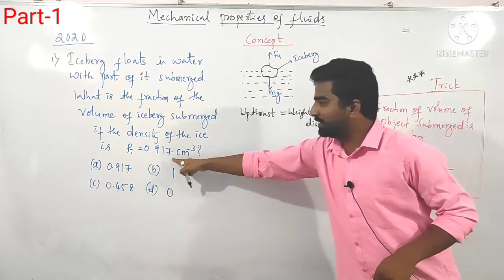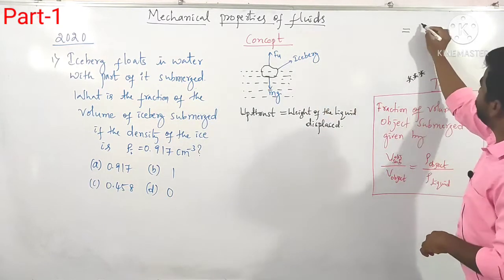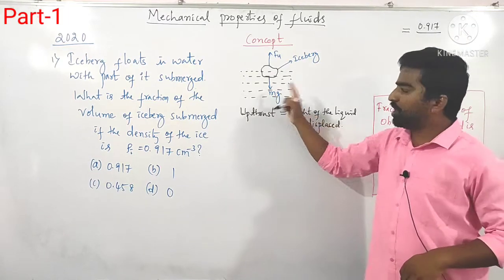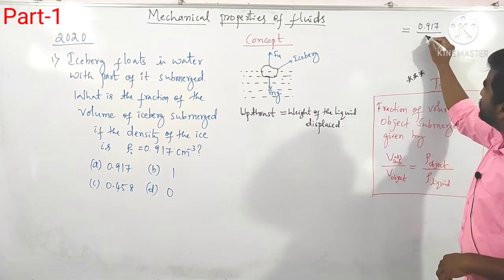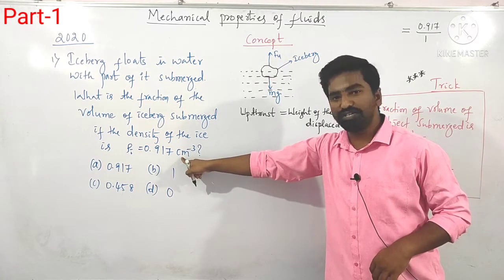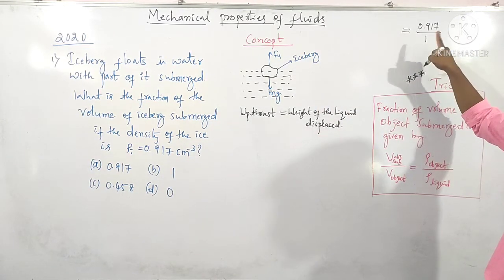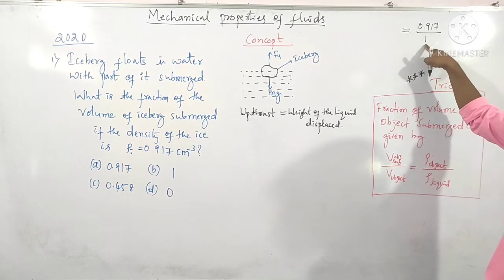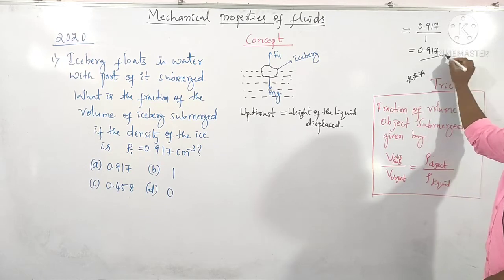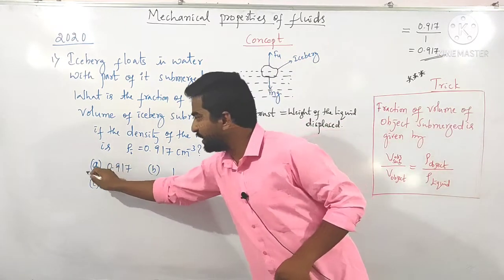The density of the object given here is the iceberg, which is 0.917. The liquid here is water. The density of water in CGS units is 1, and in SI units it is 1000. So the fraction equals 0.917 divided by 1, which gives 0.917. This is the answer for the given question, so option A is correct.